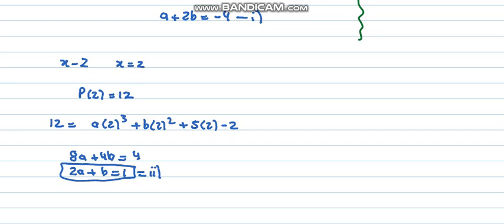So equation number 1 and equation number 2, I can now solve them simultaneously to get my values of a and b. Solving them simultaneously would give me a equals 2 and b equals -3.